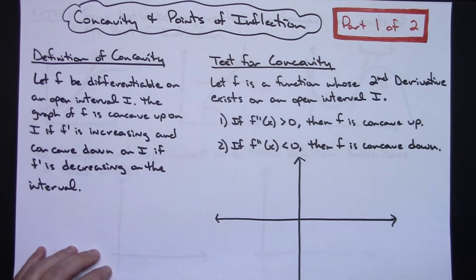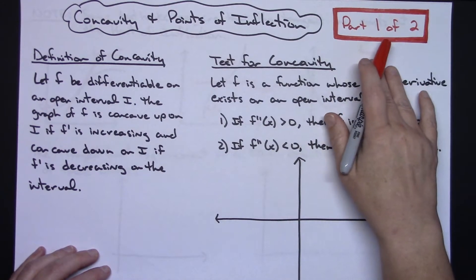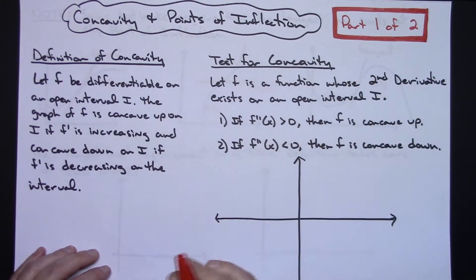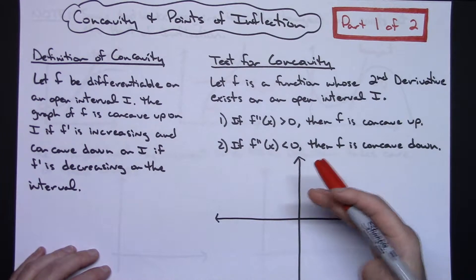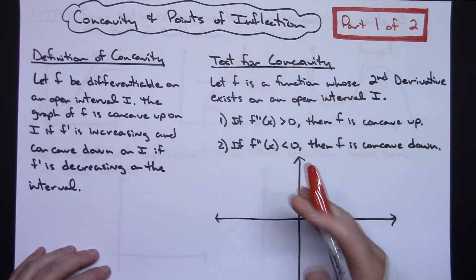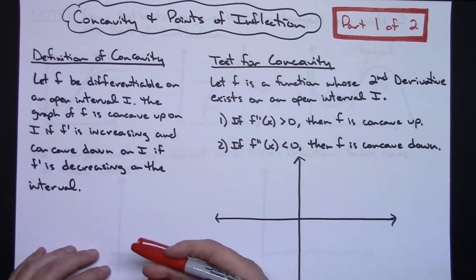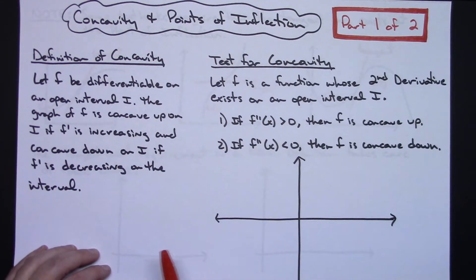In this video, I'm going to be taking a look at concavity and points of inflection. This is going to be part one of two because I'm going to focus on definitions and some tests and what this is going to look like pictorially. And in video two, we'll actually work out an example where we are doing it algebraically and we're finding the concavity and any points of inflection that might be there.